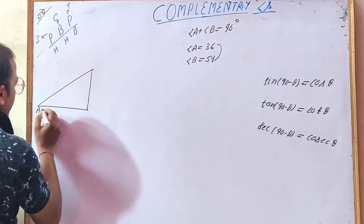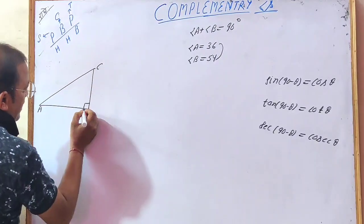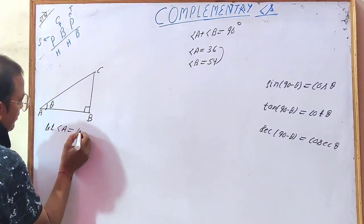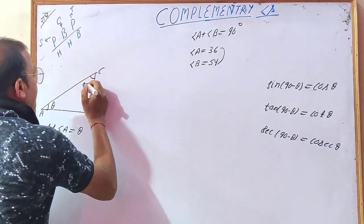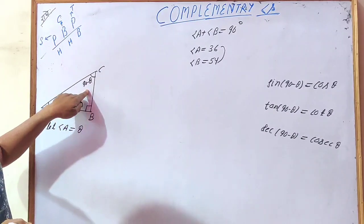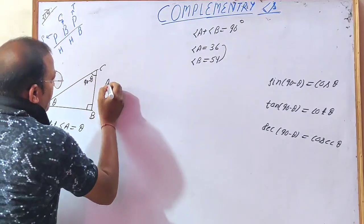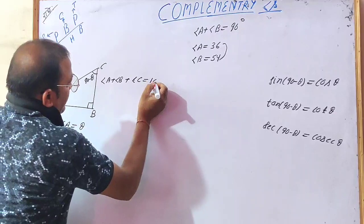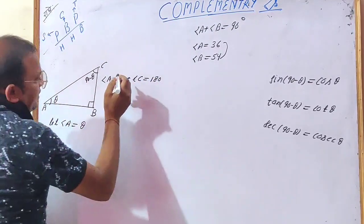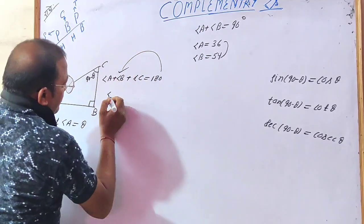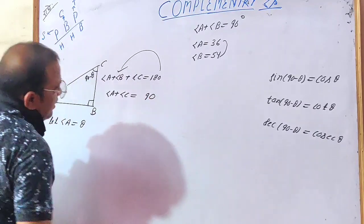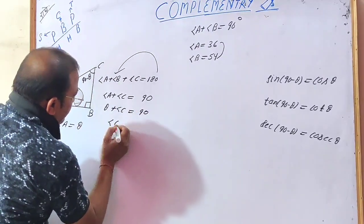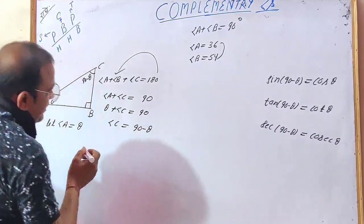In right angle triangle ABC, angle B is 90 degrees. Let angle A be equal to theta. So angle C will be 90 minus theta. We can verify this with the angle sum property: A plus B plus C is equal to 180. Angle B is 90, so transferring it gives angle A plus angle C equals 90. Since angle A is theta, the value of angle C is 90 minus theta.